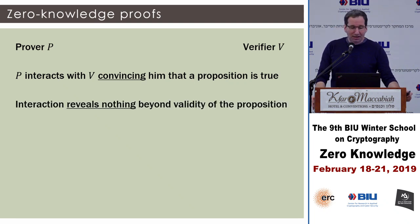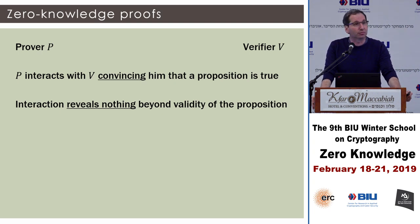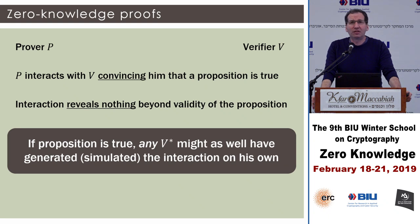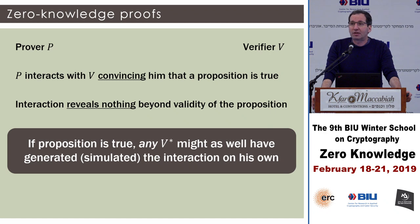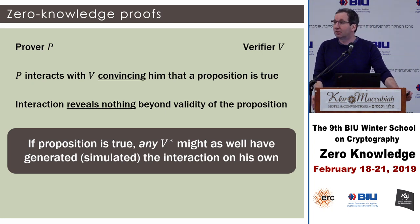What's amazing about it is that this interaction reveals nothing beyond the fact that the proposition is true. In zero knowledge, if the proposition is true, then any verifier — even one that deviates from the prescribed instruction of the protocol — might as well have gotten the information that the proposition is true and talked to himself. This is our way of saying that he didn't learn anything from the interaction.